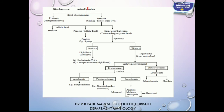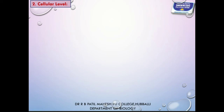The animal kingdom is broadly classified into two groups: all unicellular living organisms placed in Protozoa, and all multicellular living organisms placed in Metazoa. Protozoans exhibit protoplasmic level of organization, whereas Metazoa exhibit cellular, tissue, organ level, and organ system grades of organization.